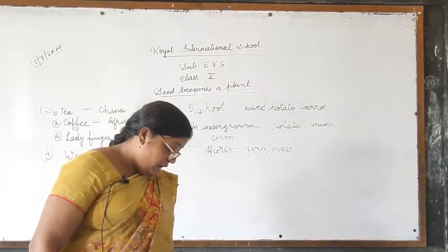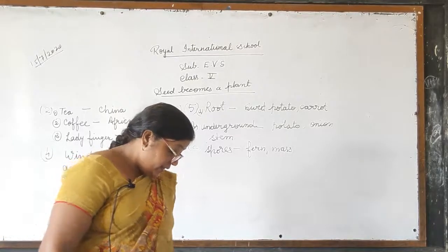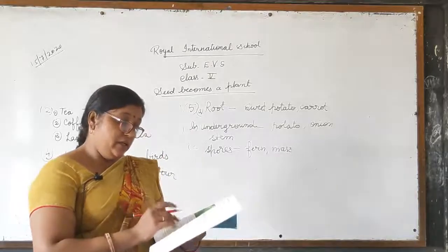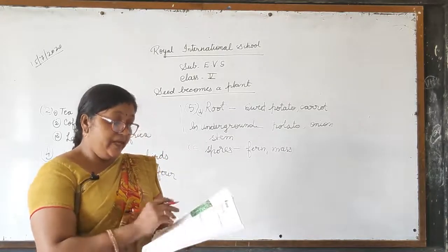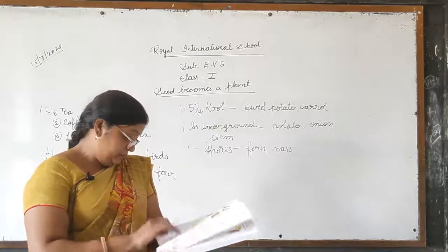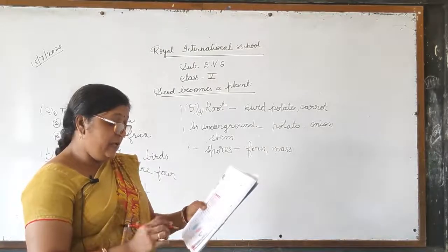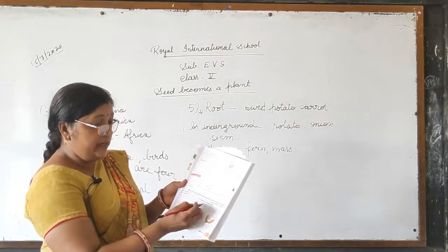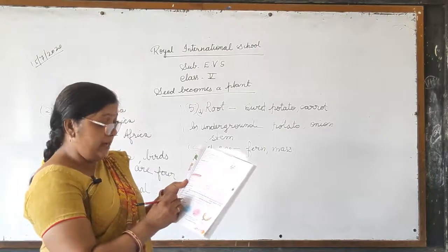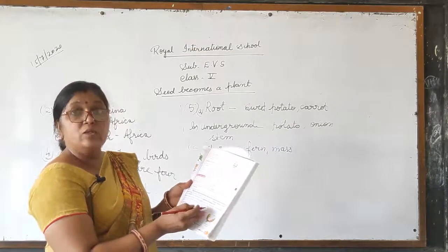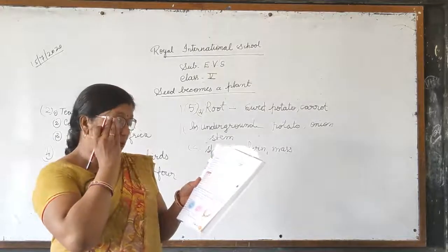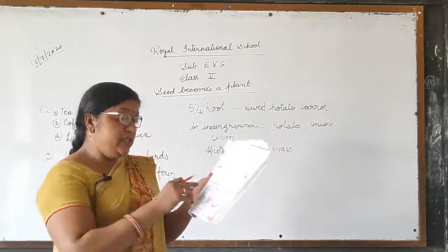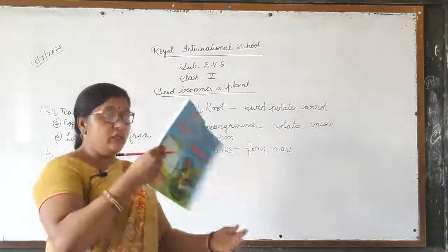Let us start the sixth question: how do the following help in dispersal of seeds? Part A is wind. Let us go to page number 57. Some seeds are light and have special tufts of hair or wings that help them to be carried away by the wind from one place to another. Some seeds are light with a tuft of hair or wings, and these help the seed travel from one place to another by wind.